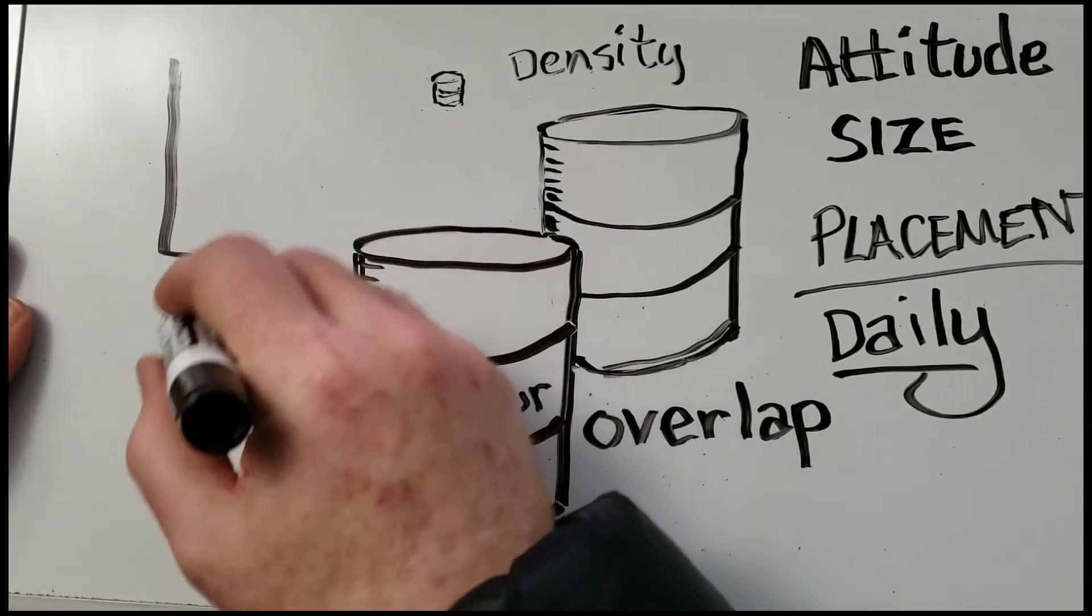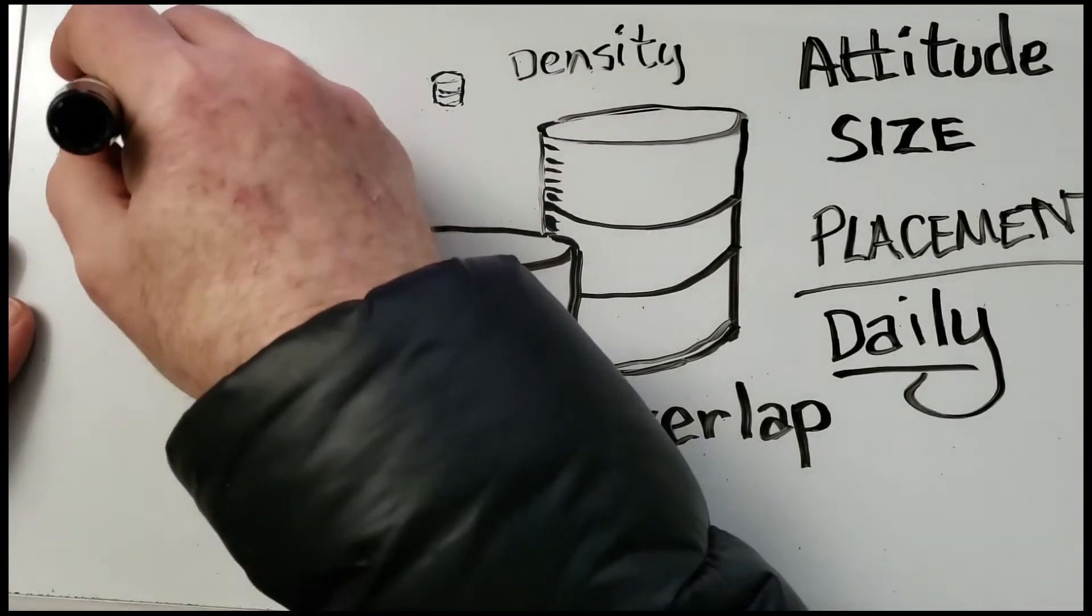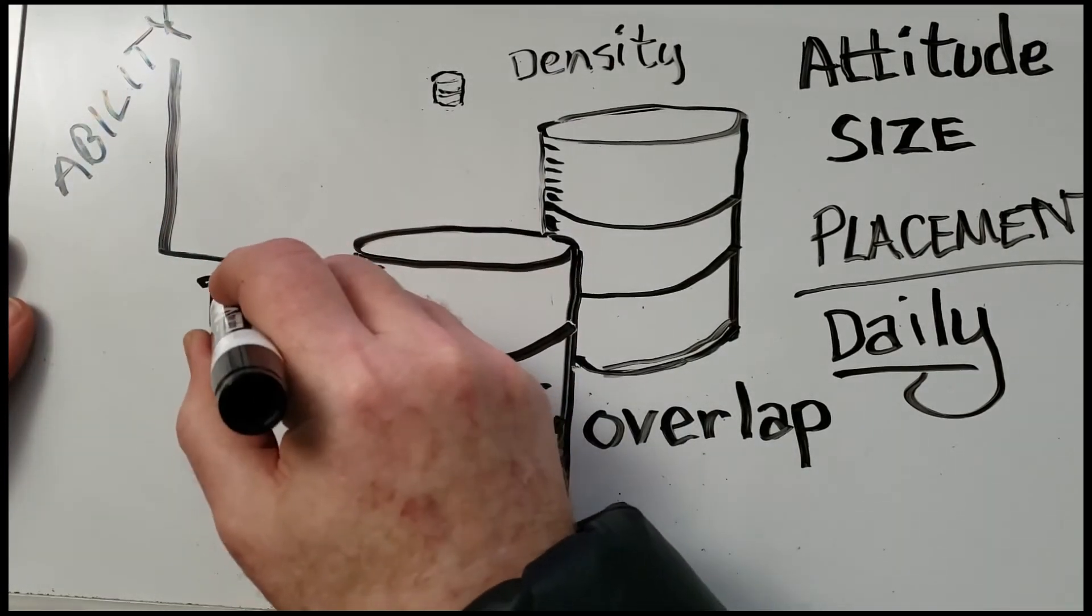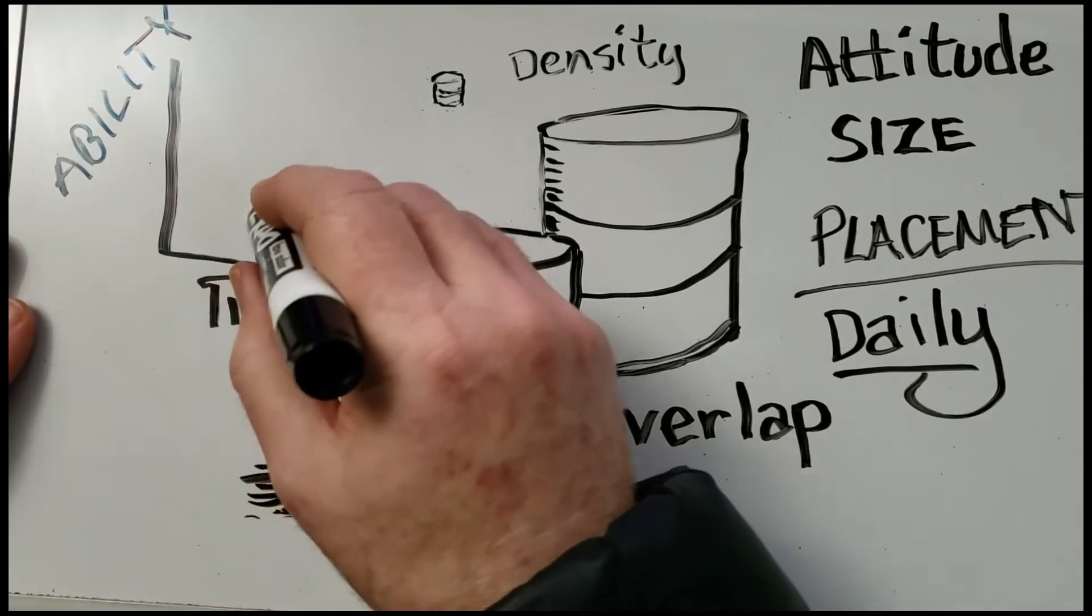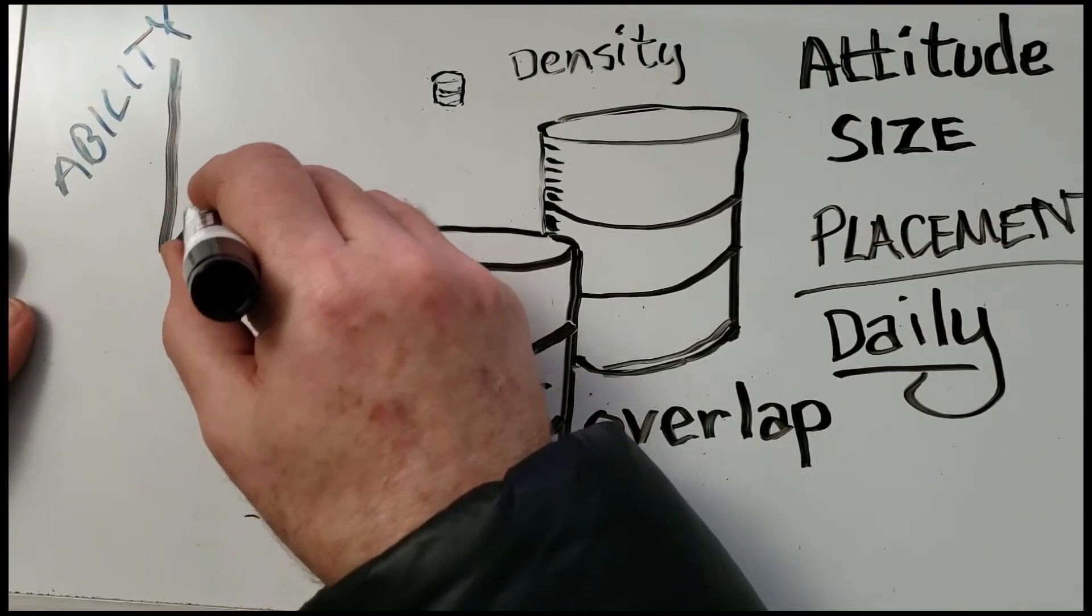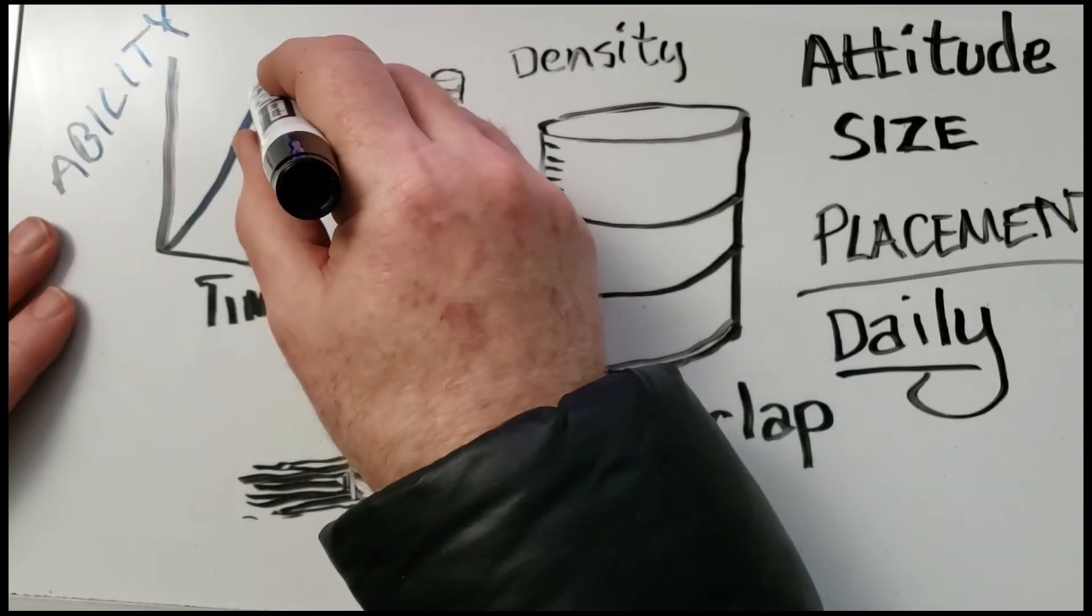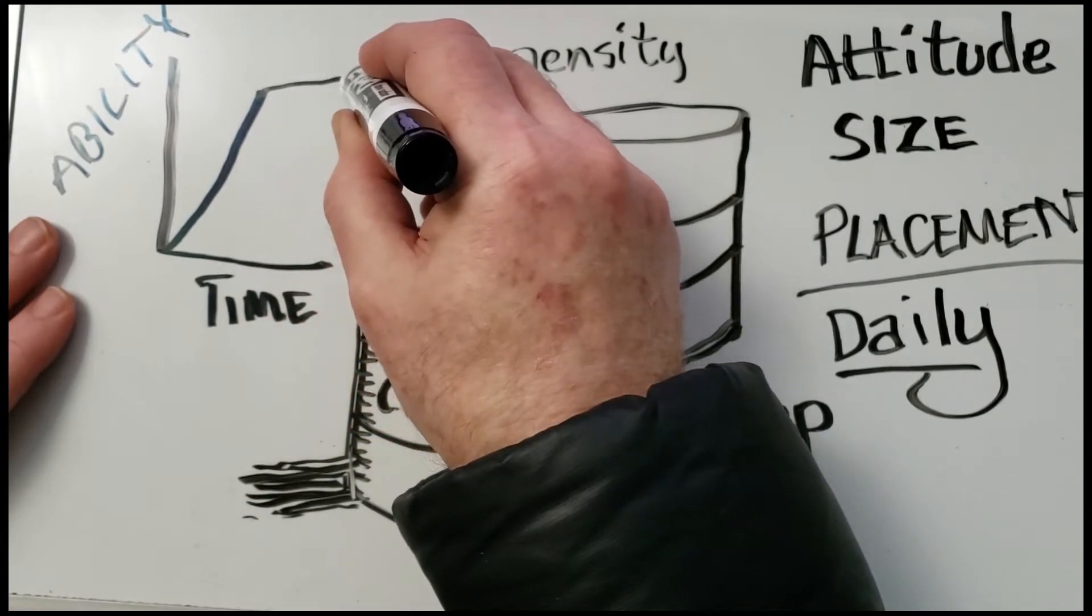Now, what happens is, if we were to put your progress on a chart, and this is ability over time, you're going to get much better very quickly. So in a very short amount of time, you're going to become a much better artist.